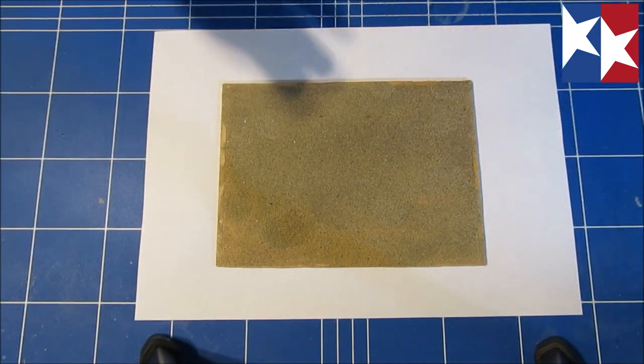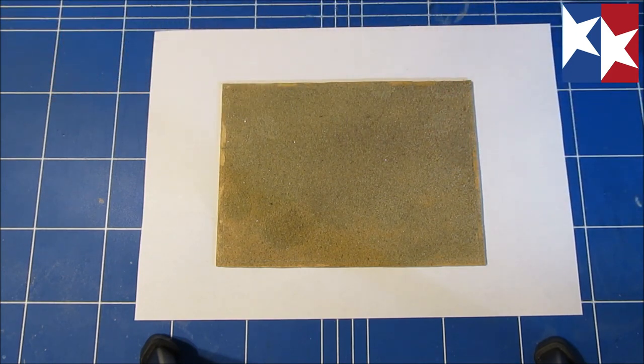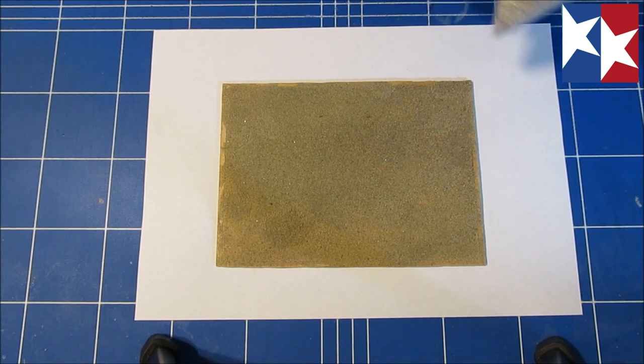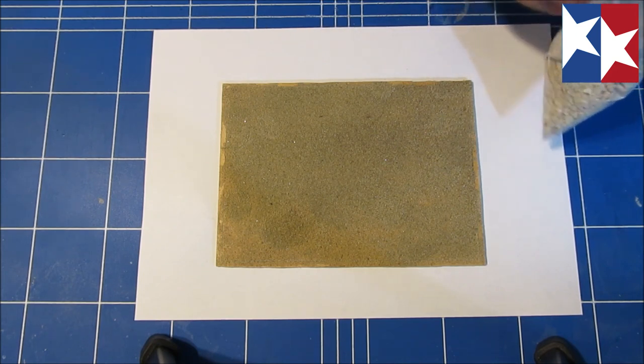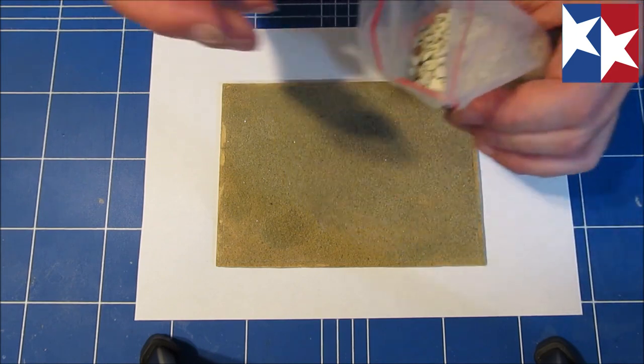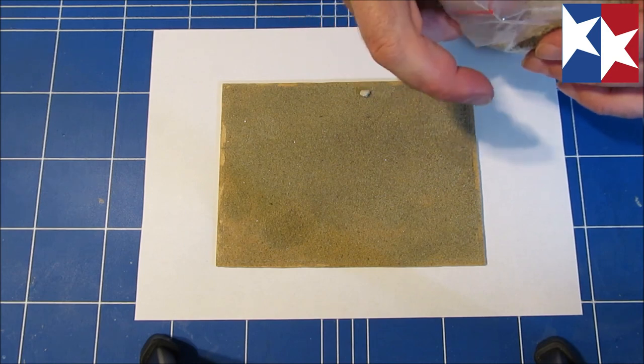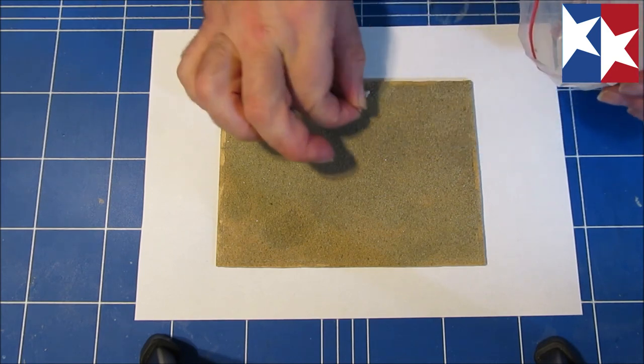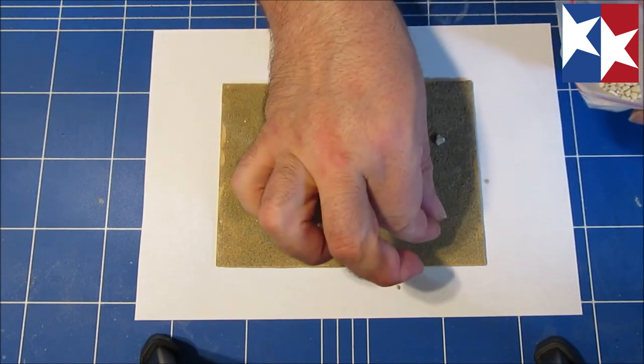Now that the sand has dried you can basically already mount it into the frame. But to make the base a bit more interesting we're going to add some bits and pieces. Like maybe a couple of rocks. And what I have here, this is basically cat litter.